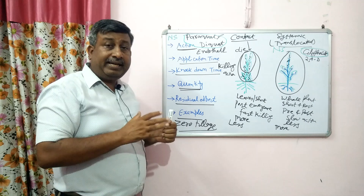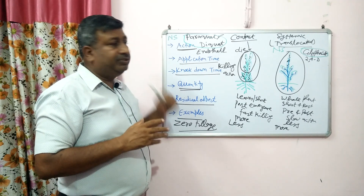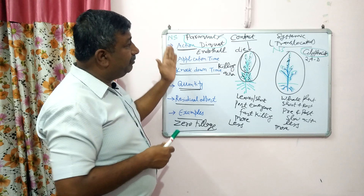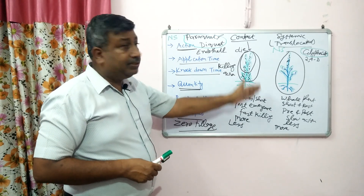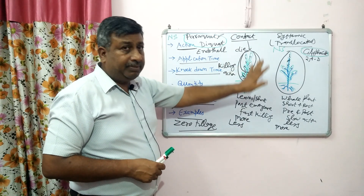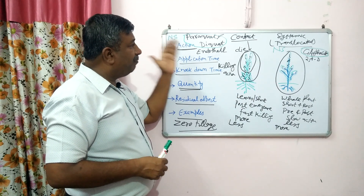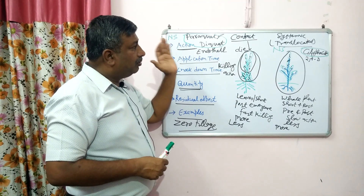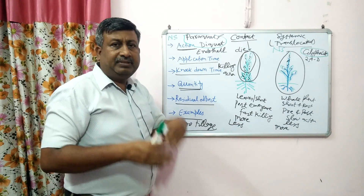In areas where less residual effect is required, contact herbicides are used. This is the key difference between contact and systemic herbicide. Many herbicides available in the market are systemic herbicides. Remember the examples: paraquat, diquat, and endothall are contact herbicides. Atrazine, tembotrione, topramezone, and many newer herbicides are all systemic herbicides.